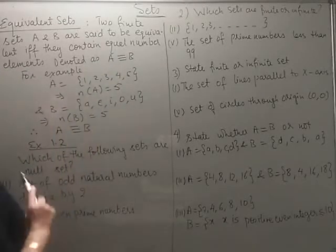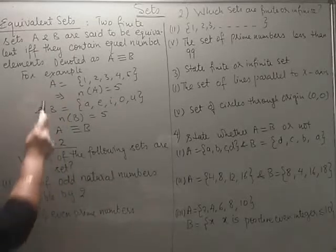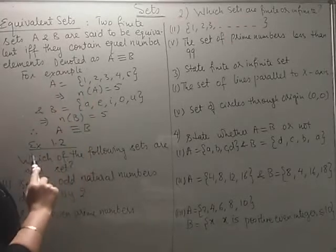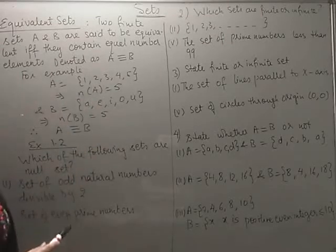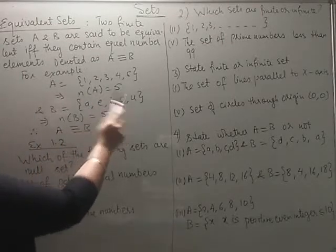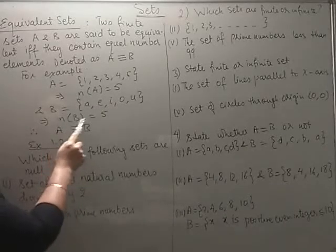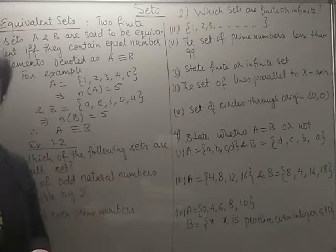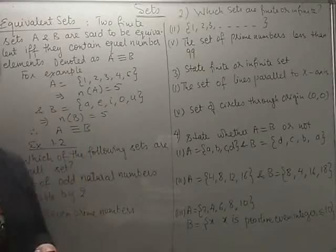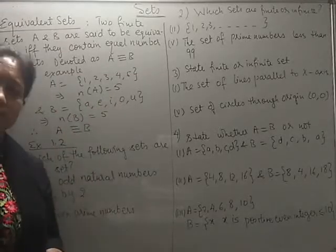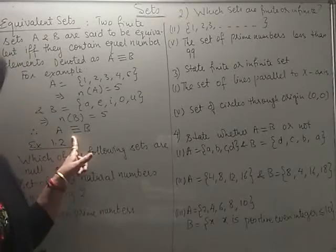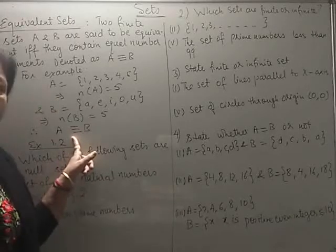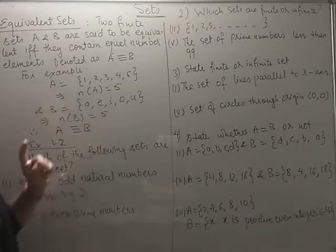This is the notation for two equivalent sets. You can see I have taken one example. A contains first five natural numbers, so number of elements in A are five. B is taken as having the five vowels, so number of elements in B are five. So we can say set A and B are equivalent but we cannot call them equal because these five elements which they both are having are not exactly the same. Equivalent sets may be equal sets, they may not be equal sets. In general they are not equal sets, but every two equal sets are equivalent.